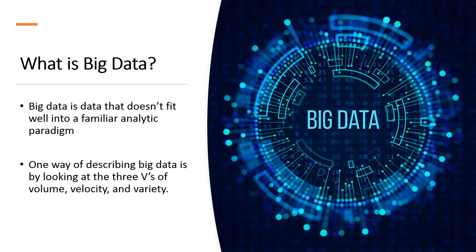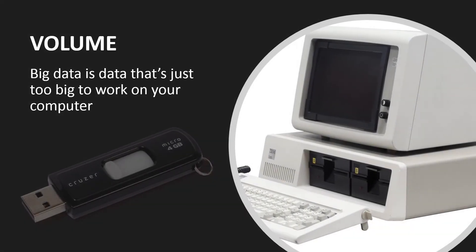Let's start by looking at the first of the three V's: volume. In its simplest possible definition, big data is data that's just too big to work on your computer. Obviously this is a relative definition — what's big for one system at one time is commonplace for another system at another time. That's the general point of Moore's Law, a well-known observation in computer science that physical capacity and performance of computers double about every two years.